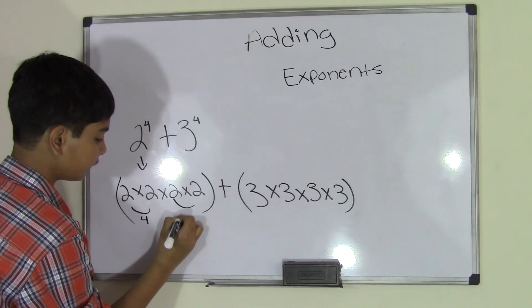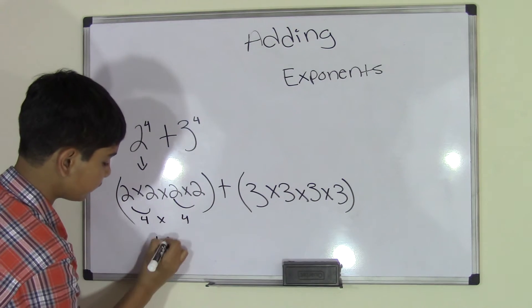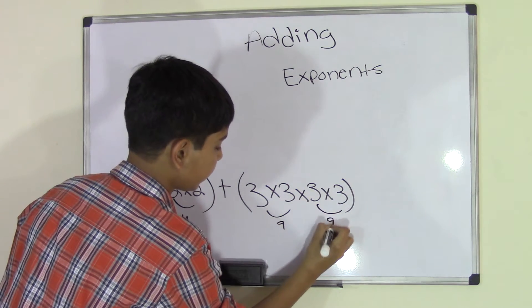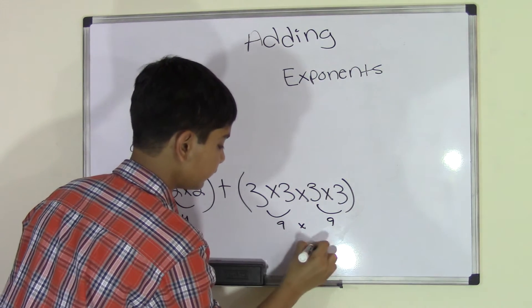2 times 2 is 4. 2 times 2 is 4. 4 times 4 is 16. And 3 times 3 is 9. 3 times 3 is 9. 9 times 9 is 81.